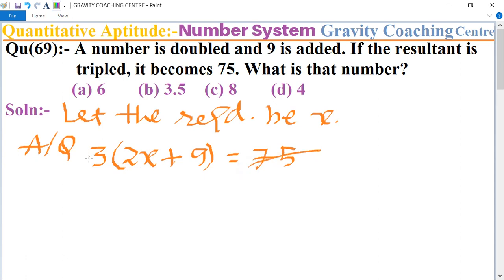75 divided by 3 is 25, so 2x + 9 = 25. This implies that 2x = 25 - 9.